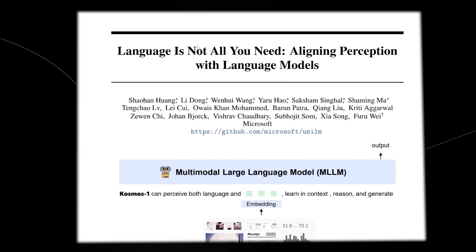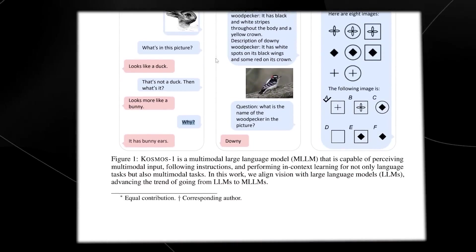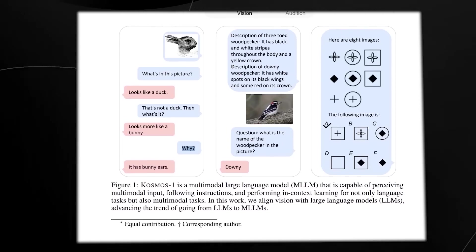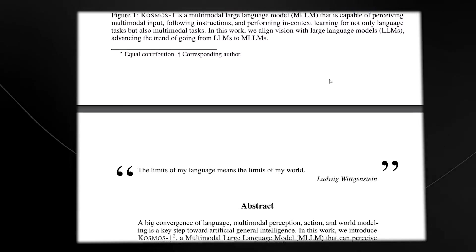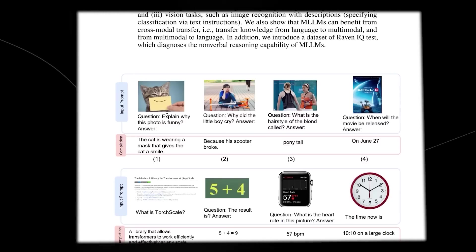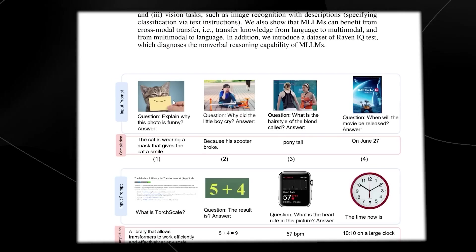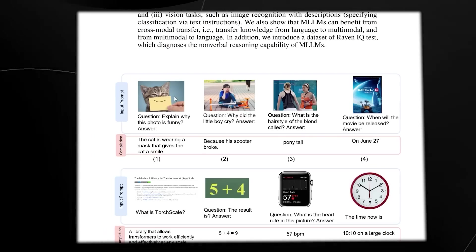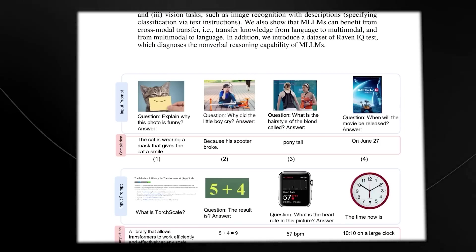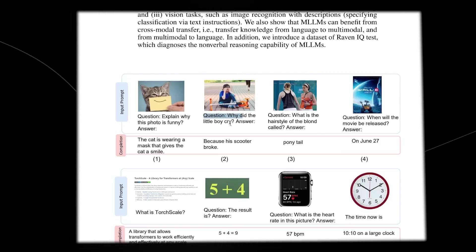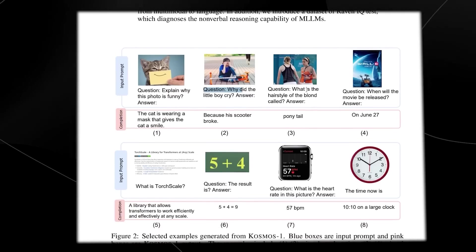So the fact that AI can completely understand this is very interesting. Now, this paper wasn't released too long ago and it was released by Microsoft. So I'm guessing that this is what they were working on to add towards ChatGPT. And what's really cool is that you can see that they're asking them some really difficult questions and you get some really interesting responses. One of the things that we have here is, of course, explain why this photo is funny. The cat is wearing a mask that gives the cat a smile. What is the hairstyle on the blonde called? A ponytail.